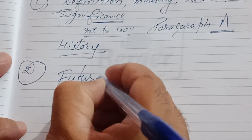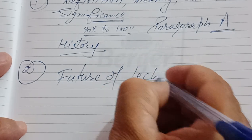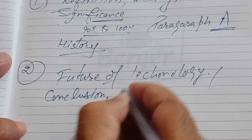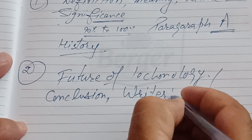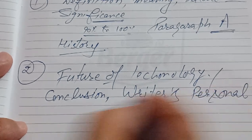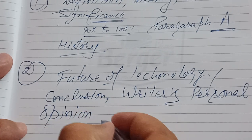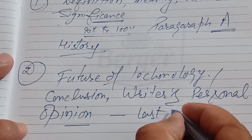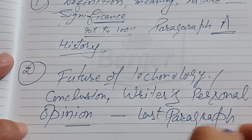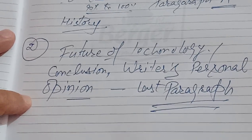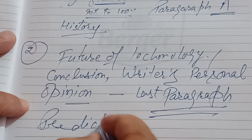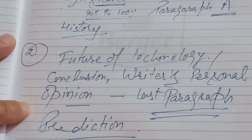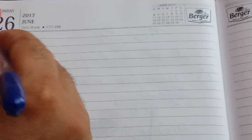Tip number two: headings about the future of something — how a technology will work in future — or a conclusion, or the writer's personal opinion about any technology or research, are usually in the last paragraph. Future estimates and predictions about any technology or how it will function in the future — such headings are always the last paragraph.